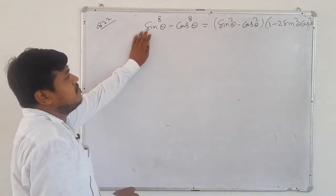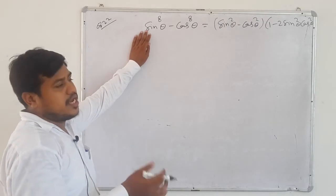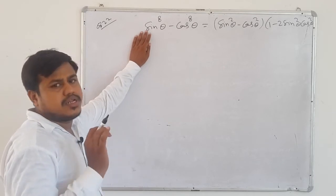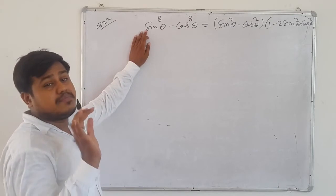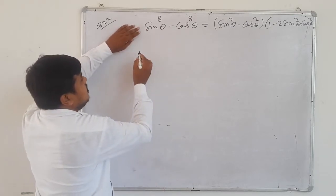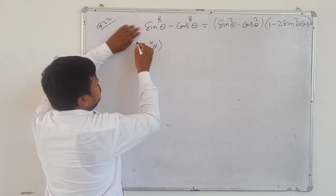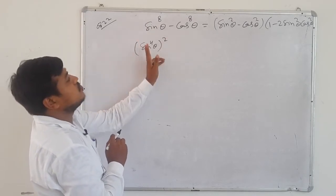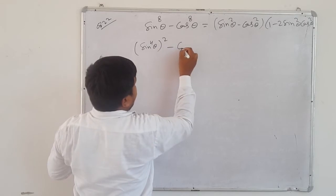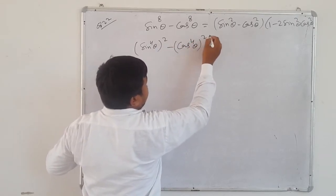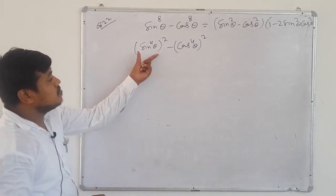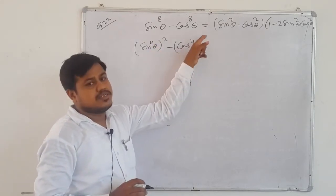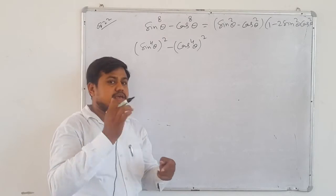How to solve: sin⁸θ - cos⁸θ. We can't take LCM here from the start, can't rationalize, can't apply a trigonometric identity. So focus on algebraic identity. Write sin⁸θ as (sin⁴θ)², because a^(m×n) = (a^m)^n, so 8 = 4×2. Similarly cos⁸θ = (cos⁴θ)².